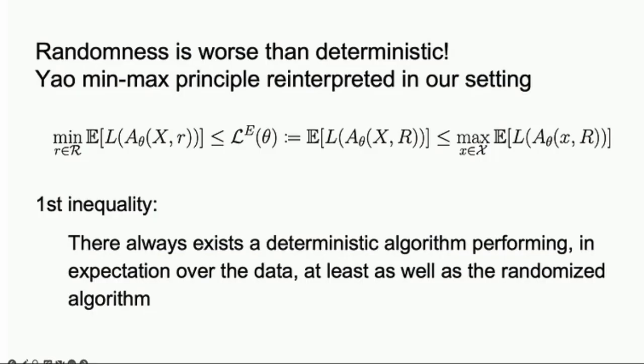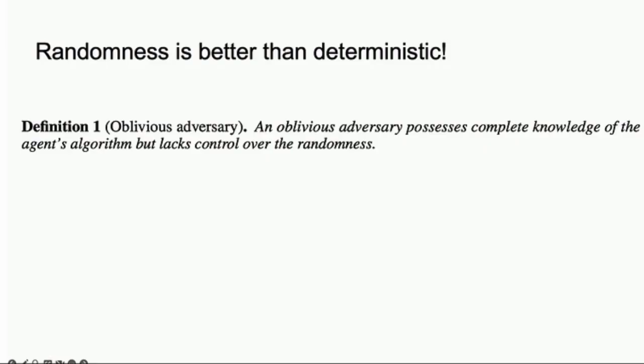This implies that for whatever randomized algorithm, there exists a deterministic algorithm which performs in expectation over the input at least as well. Finding this seed might be complex, but this is an asymptotic result. So mathematically there seems to be nothing to extract from randomization if you care about empirical risk minimization. But what happens if you dive away from this setting?